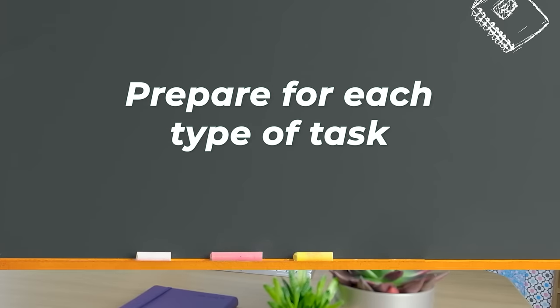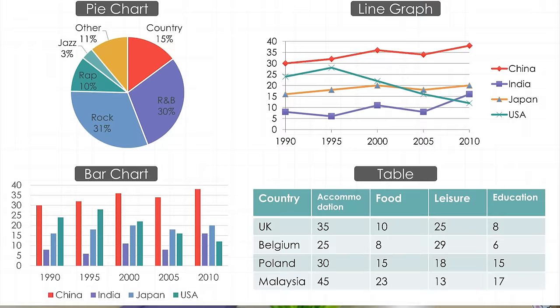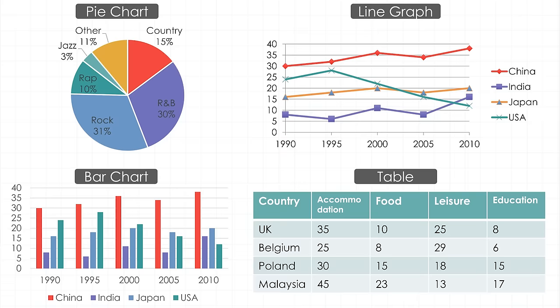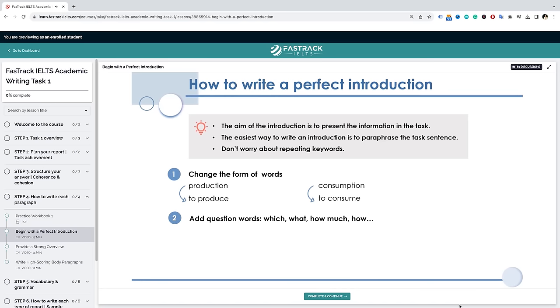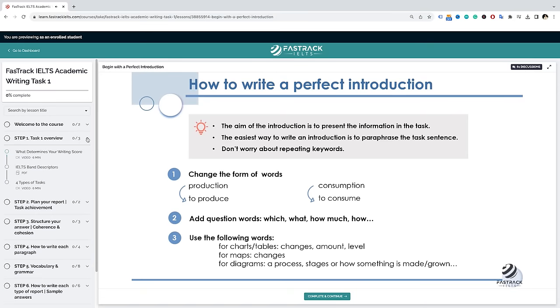The next tip is to prepare for each type of task. In Task 1, you may get pie charts, a bar chart, line graph, table, map, or diagram. You should learn what's special about each of them and practice writing your answers. For in-depth preparation, learn how to analyze the data, what to write about in each paragraph of your report, and how to meet all the requirements. We cover all this step-by-step in my online courses, which can help you prepare in less time and achieve a higher score. I'll link them in the description.